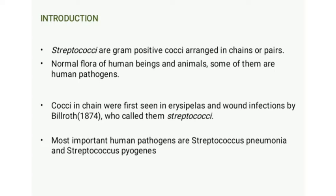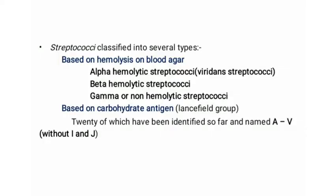Streptococcus pyogenes causes pyogenic infections, while Streptococcus pneumoniae causes pneumonia. Chain-like cocci were first discovered in erysipelas and wound infections by Billroth in 1874, and he called them Streptococcus due to their chain-like structure.